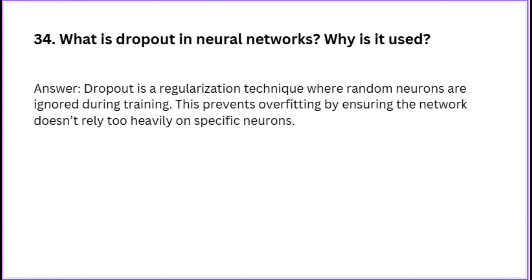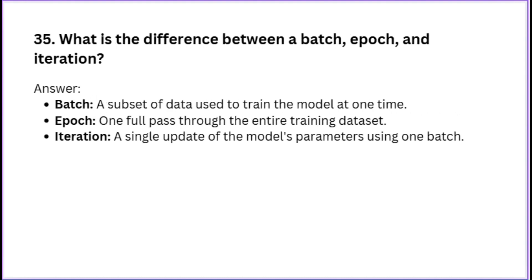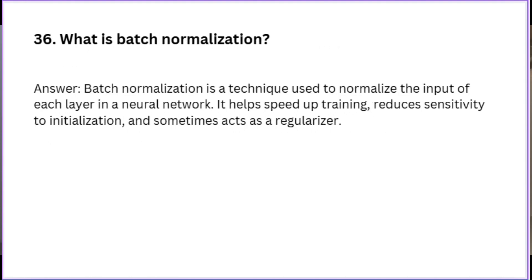Why is dropout used? What is the difference between a batch, epoch, and iteration? What is batch normalization?